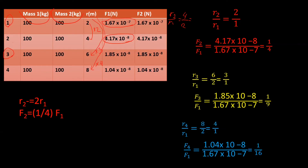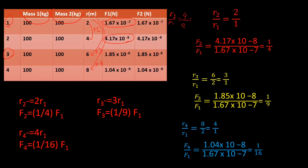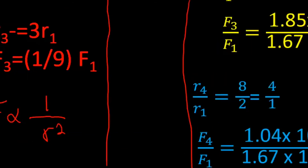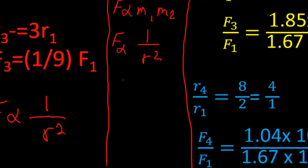R2 equals 2R1 but F2 is one quarter of F1. Can you see the relationship between F and R? F is proportional to 1 over R squared. So far we've found F is proportional to M1 times M2, and F is proportional to 1 over R squared. Together: F is proportional to M1 times M2 divided by R squared.